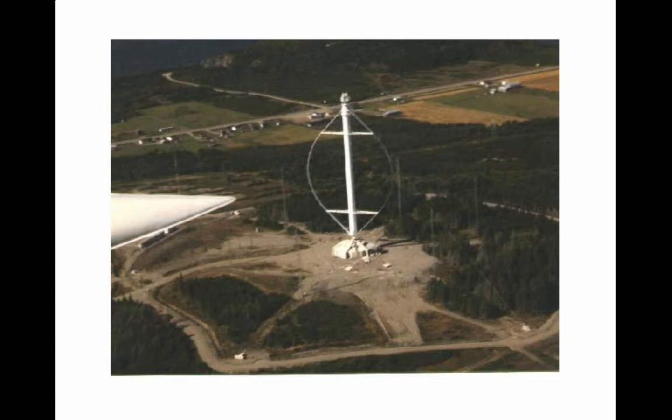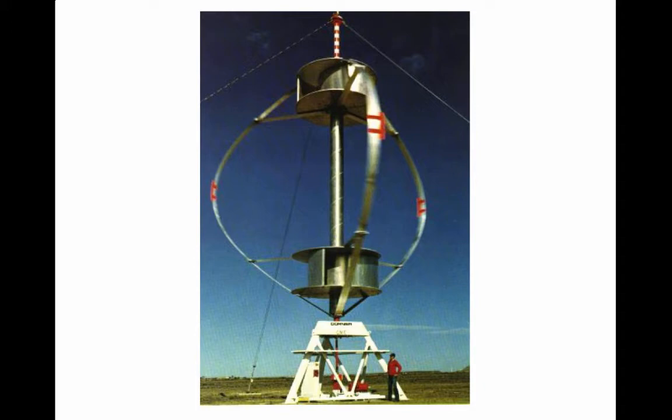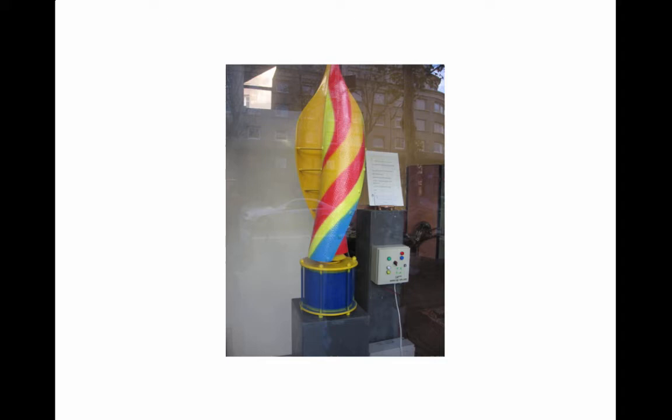Here's another egg beater type — also called the Darrieus rotor. They don't start all by themselves, so oftentimes they have a Savonius wind turbine on the bottom that will start by itself, get spinning, and then the airfoil on the blade makes it run after that. Here's a sculptural piece of vertical axis wind turbine — the part that moves and collects energy from the wind, and this is the part that has the generator with the wires and the magnets.